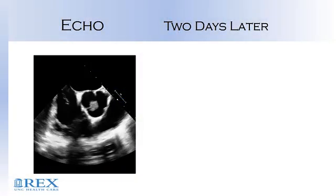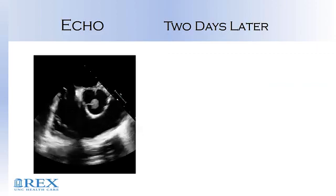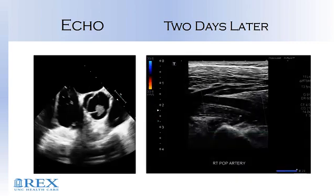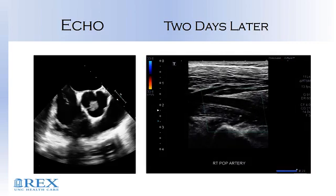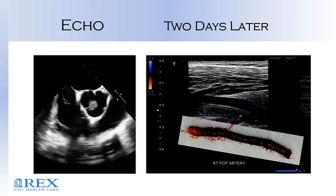The person then went for an echo, and they found this. The person was stabilized and was set up for heart surgery. Two days later, the person can't feel pulses in their right leg. They came back, and this is what I found in the right popliteal artery. The person then had an embolectomy performed, and after the heart surgery, the person fared out well.